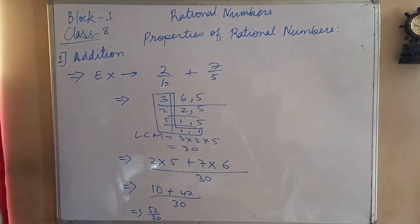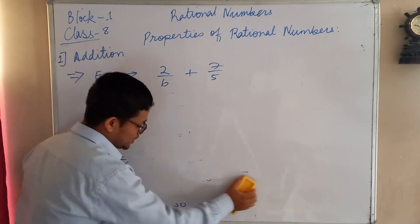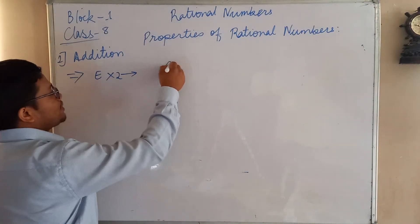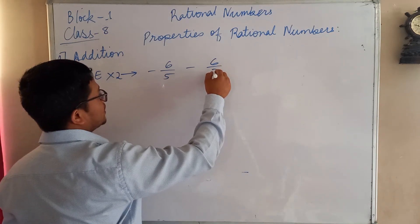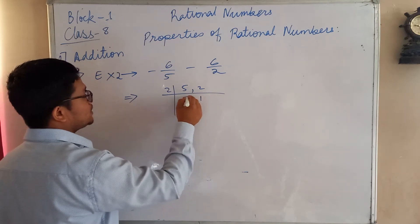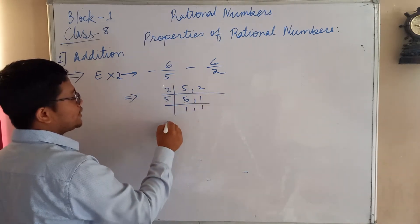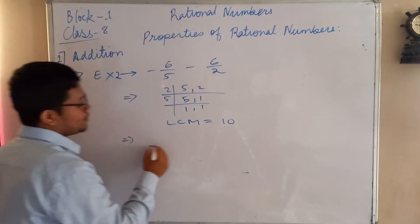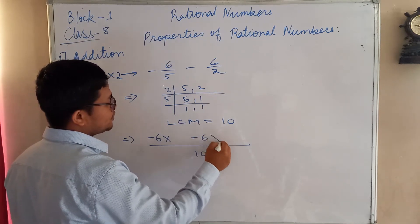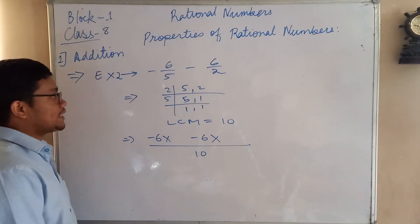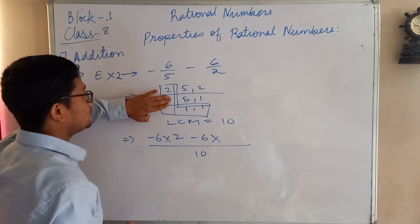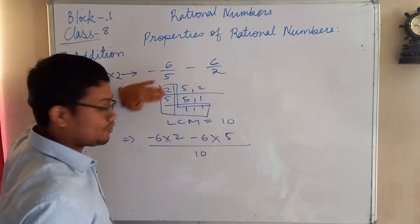Now if I deal with rational numbers which have negative values — example number two. Just imagine you have rational numbers with negative values like this. In this case, first find the LCM of 5 and 2 using prime numbers. You will get LCM as 10. Make a long line, write 10 in the denominator, write minus 6 and leave space for the sign, then leave space for 2. Hide 5 from LCM — 2 is left, so write 2. Hide 2 — 5 is left, so write 5.